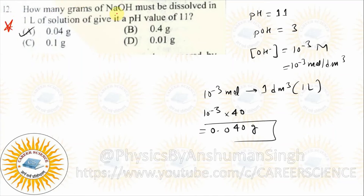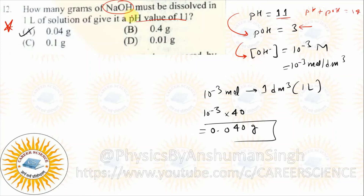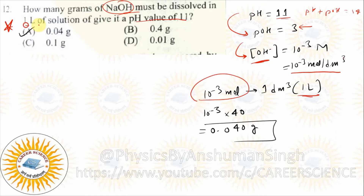Special problem: how many grams of NH3 must be dissolved in one liter of solution to give a pH of 11? pH is given, so pOH = 14 - 11 = 3, then find [OH-]. Then moles = [OH-] × volume. Grams = moles × molar mass. Substitute and the answer will come.